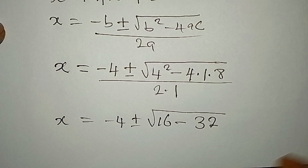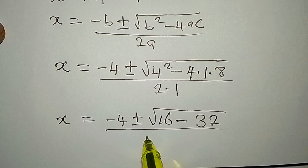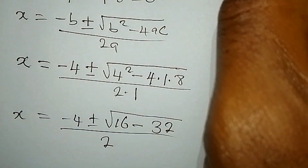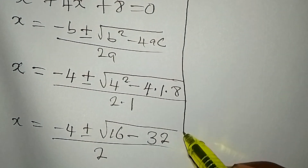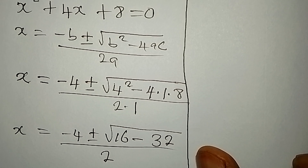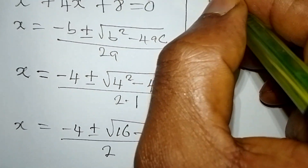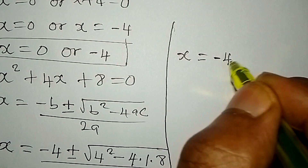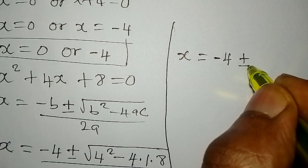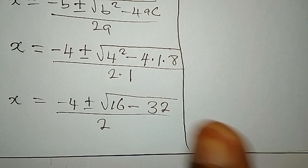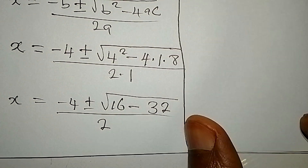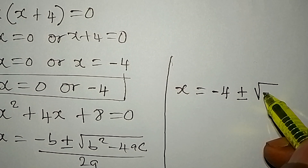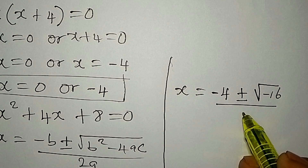So x equals negative 4 plus or minus the square root of 16 minus 32, which is the square root of negative 16, all over 2.